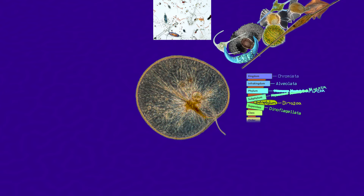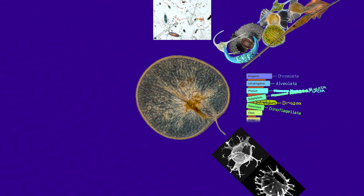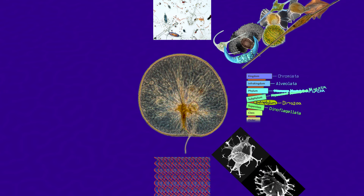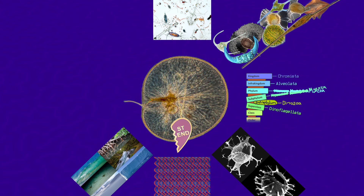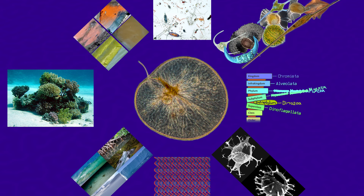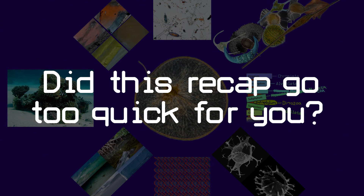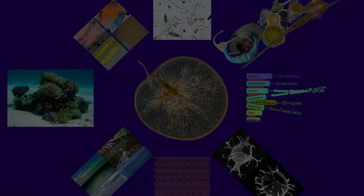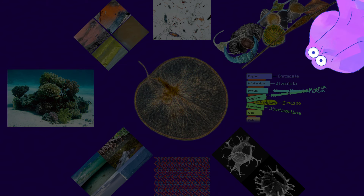But to recap: dinoflagellates are a type of plankton, they all look super different from each other, their taxonomy is a mess, they've probably been around for at least 200 million years-ish. They have absurd amounts of DNA, they can live in so many different places, they're BFFs with corals, and their friendship is so strong that corals kind of die without them, and they are one of the many types of plankton that can cause HABs, or harmful algal blooms, which are also sometimes called red tides. Did this recap go too quick for you? Keep up, I move fast, or you can just watch my last video.